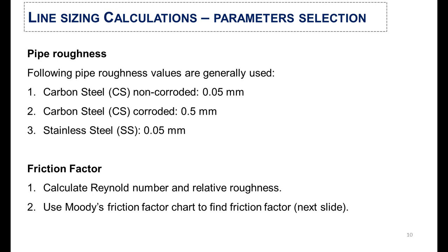For the Moody friction factor, you need to select a few parameters. First, you select the pipe roughness according to your material. If your material is carbon steel, you select 0.05 for non-cruded and 0.5 for cruded. For stainless steel, you select 0.05 as the roughness. After that, you calculate the Reynolds number and relative roughness, then use the Moody friction chart to find the friction factor.